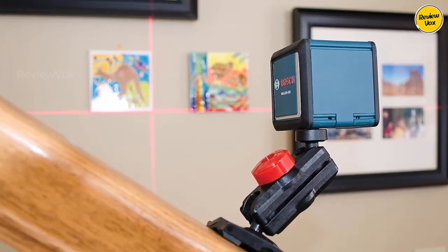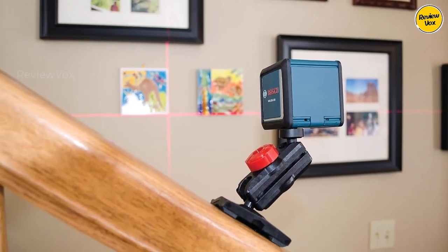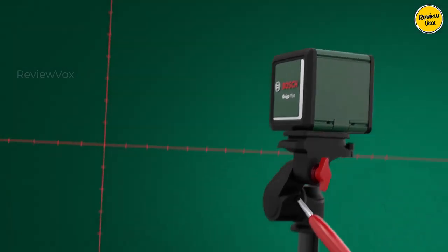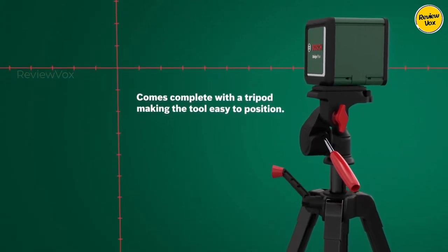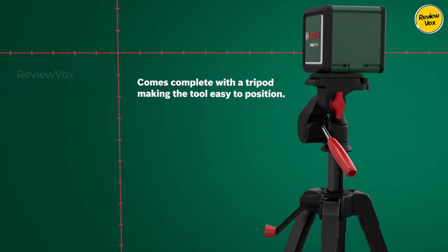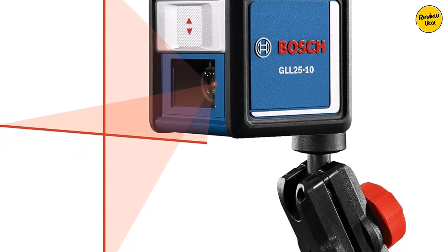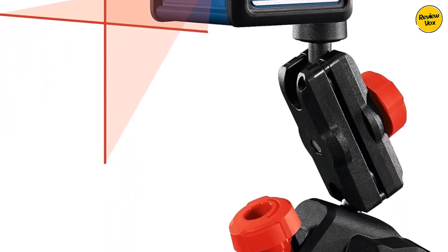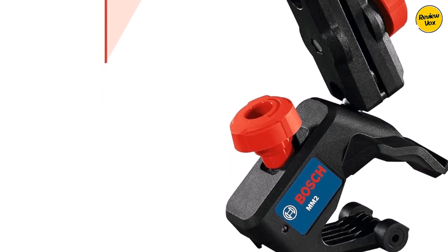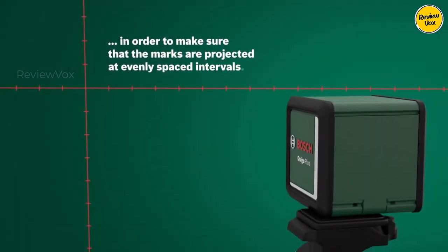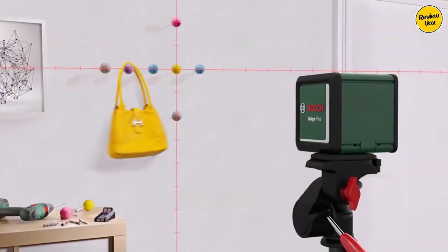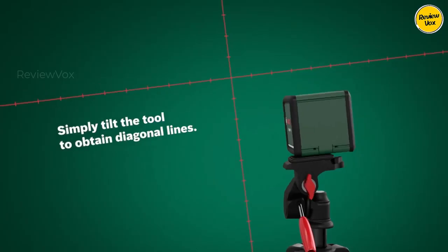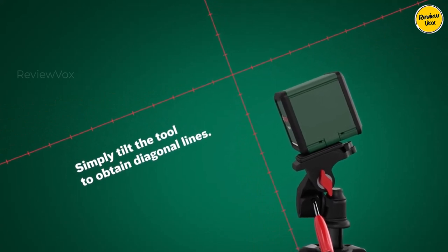The mini grip stand, accommodating posts from 1.5cm thick, adds convenience, while the slide-down cover protects the optics and locks the pendulum, ensuring durability. While the red laser may not be the best choice for bright outdoor settings, its reliability and robust construction make it an excellent tool for indoor projects, especially with its potential green laser counterpart, the Bosch GL-4020G, available for outdoor use.